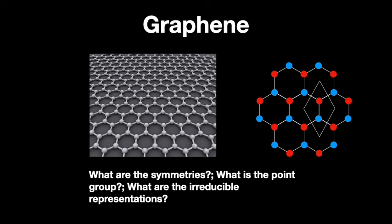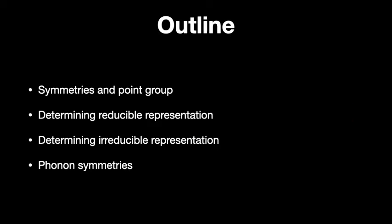The questions we are going to answer in this screencast are the following: What are the symmetries? What's the point group? And most importantly, what are the irreducible representations when it comes to phonons? The outline is: I'll talk first about the symmetries, then determine the reducible representation, show you how to calculate the irreducible representation from it, and end with the phonon symmetries.